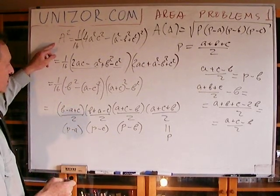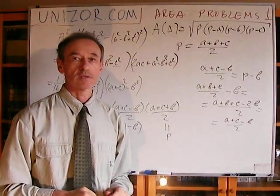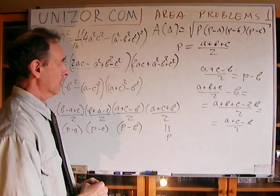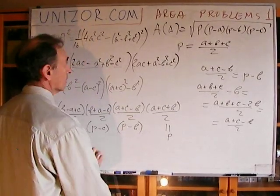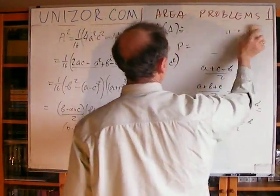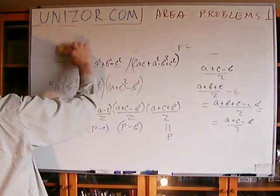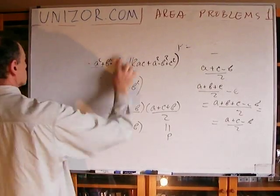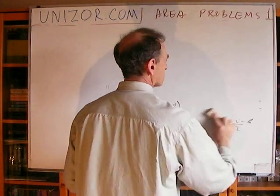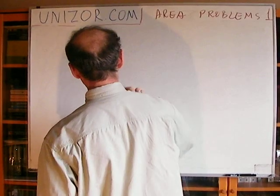The square of the area equals the multiplication of these four elements, and we've proven the formula first obtained by Hero of Alexandria — sometimes spelled as Heron, depending on the etymology.